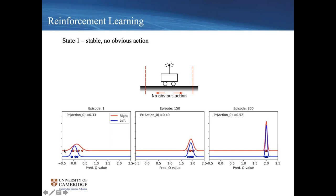On the plots, one line shows how good the agent thinks moving right is and the other shows moving left. A broad distribution means it's very unsure; a tight distribution means it's quite certain. At episode one, both actions have broad similar distributions. By episode 800, both distributions become quite peaked — it's sure of how good each action is — and they have the same value, confirming it has learned that left and right are equally good when the pole is centered.